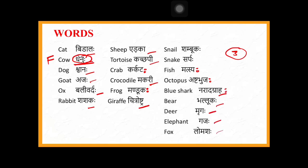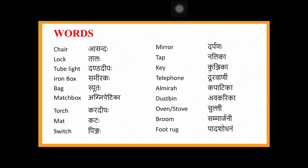In the list, edaka, kachapi, and makari have prolonging letters at the end — 'a' or 'e' — which shows feminine gender, strilinga. Even if a word ends in a short vowel 'u,' we need to consider it strilinga if it is an exceptional word, like dhenuhu.